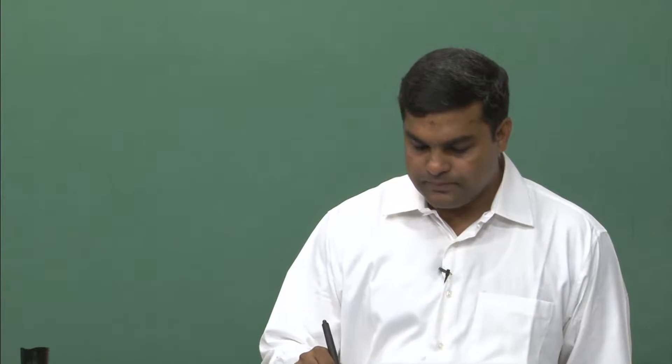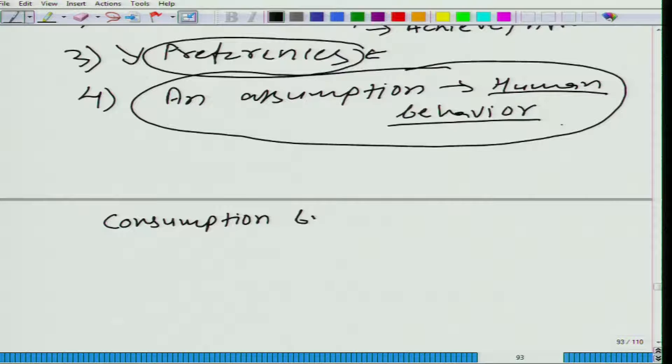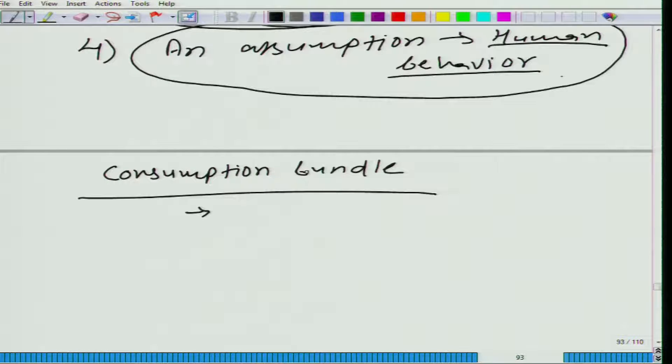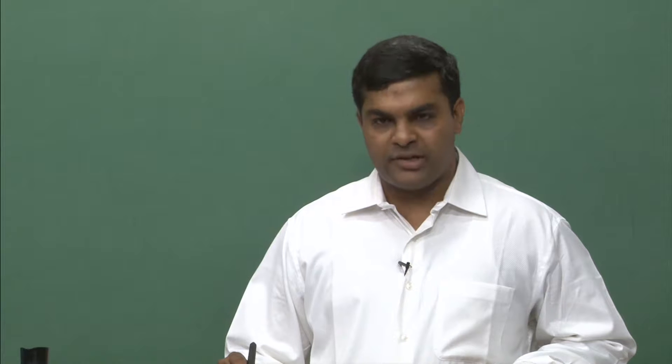But even before we start talking about preferences, a little bit of time I want to devote on consumption bundle. And here what did we say? That any bundle that you can conceive would be an element in this consumption set. Let me write it here: consumption set rather than consumption bundle. Any bundle that you can conceive should be an element in your consumption set. Now, I am not saying that a consumption set should be only two dimensional. It will be two dimensional when you are talking about only two goods. When you are talking about n goods, you will have n dimensional consumption set.